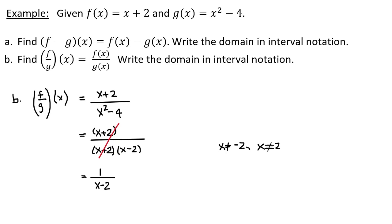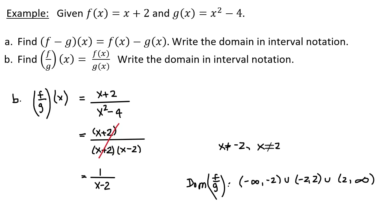For the domain, however, I still have to exclude both negative 2 and positive 2, because the input functions required me to exclude both of these. So the domain of f divided by g is all real numbers except where division by zero occurs: negative infinity to negative 2, union negative 2 to 2, union 2 to positive infinity, all with parentheses indicating those endpoints are excluded.